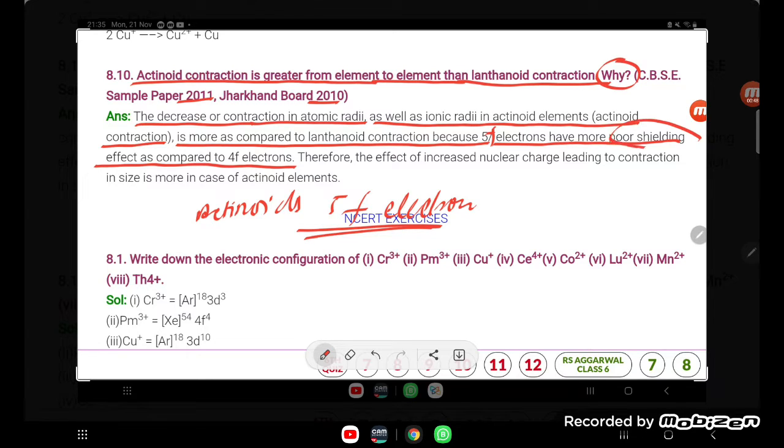And because of this poor shielding effect, they are attracted more and hence have smaller radii. Therefore, the effect of increased nuclear charge leading to contraction in size is more in case of actinoid elements.